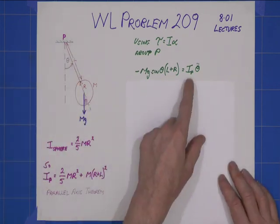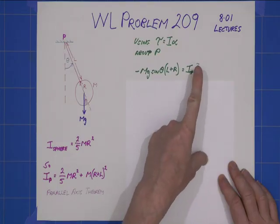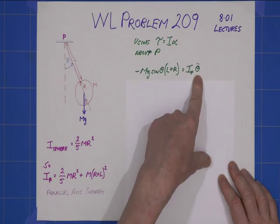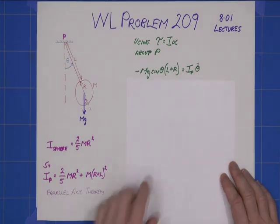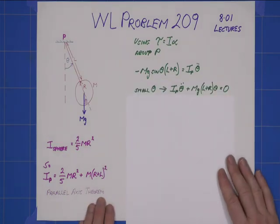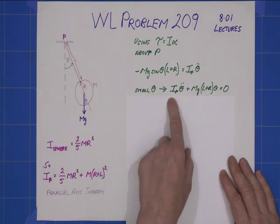mg sin θ is going to be this perpendicular component of the force, this direction there. And clearly l plus r is that, so we get that's the torque, and it's minus because it's opposing the positive direction of theta. That equals Ip, which we found down here previously, times θ double dot. Hopefully you're familiar with that notation. It's the second time derivative of theta. So θ double dot is our α there. Put all that together with small angle approximation, we get this.